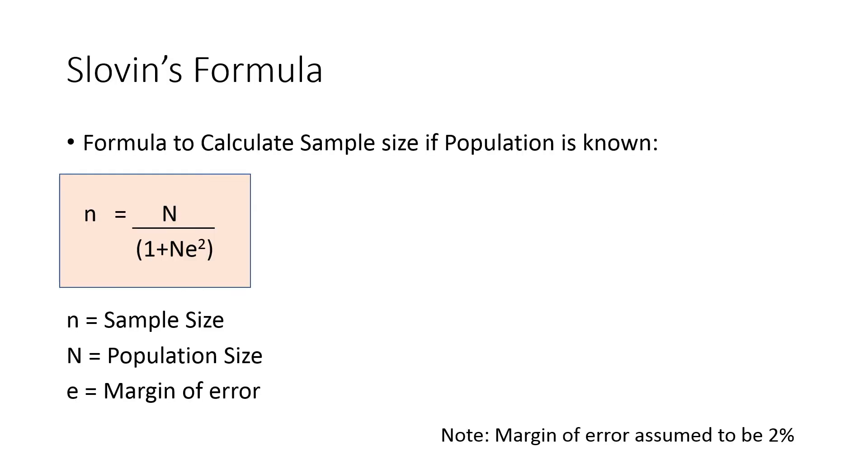So let us see the formula. The formula is Sloven's formula and this is the case if the population is known. The formula is n equals N divided by 1 plus Ne square. Small n is the sample size and that is equal to population size, that is capital N, divided by 1 plus N into e square.